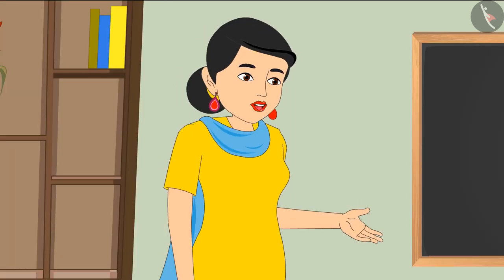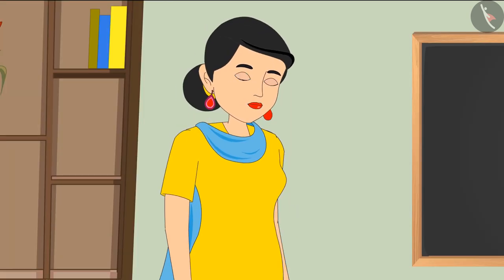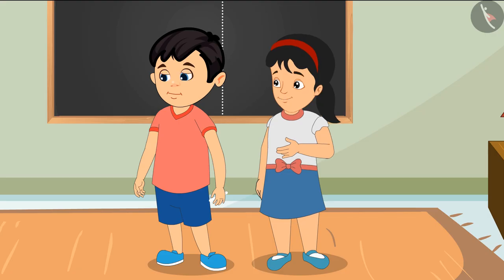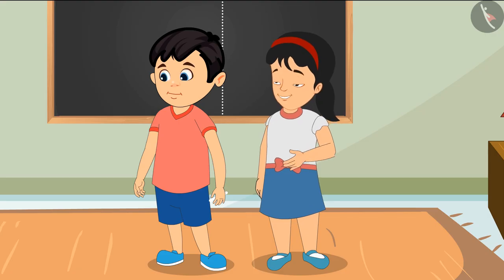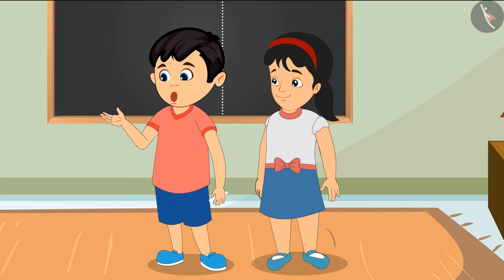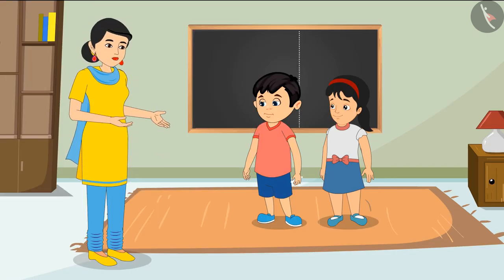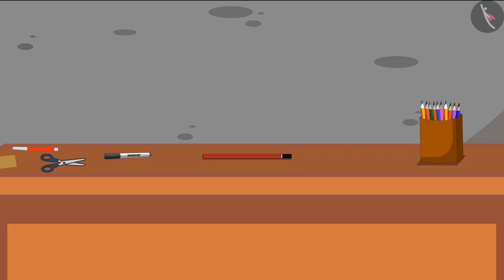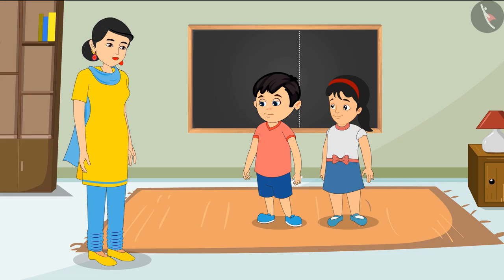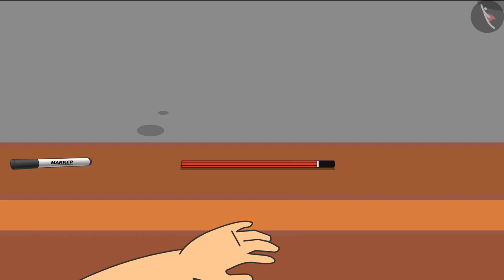'It will tell you if any of you has more space.' 'Yes mommy, you are right, but how will we measure?' 'Do one thing — bring that pencil from the table and measure the blackboard.' Chotu gets the pencil from the table.